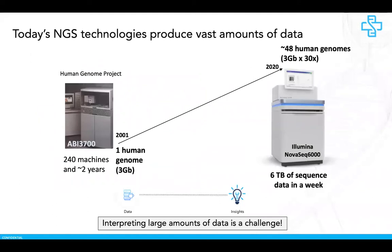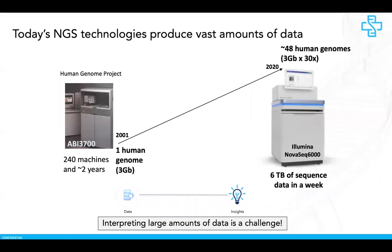As one can imagine, the amount of data being produced is staggering. Going back to the Human Genome Project, roughly 240 machines and two to three years of sequencing produced a single human genome of about 50 gigabases. Fast forward to today, a single NovaSeq — the workhorse of Illumina — can produce roughly six terabytes of sequence data in a week, roughly 48 human genomes each covered at least 30 times. This is just one machine. There are hundreds of such machines in large sequencing cores all over the world. The challenge is: how do you handle and interpret such large amounts of data?